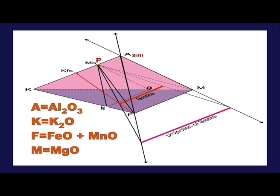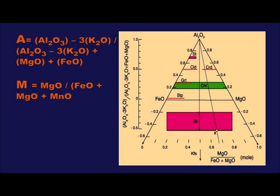Those compositions lying on the tetrahedral sector P-A-F-M project within the AFM triangle itself. Examples are almandine, staurolite, chlorite, chloritoid, etc. Others such as biotite, located in the pyramidal sector P-O-N-F-M, plot below the FM join. Note that the point of K-feldspar, when projected along a straight line originating at point P, intersects the AFM plane only at infinity, indicated by the arrow near the mineral potassium feldspar.